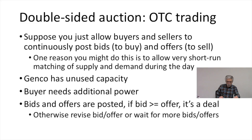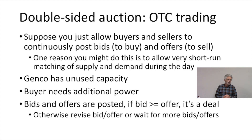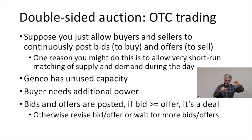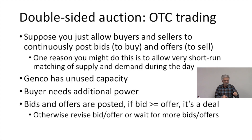Now we're going to move on to a slightly different kind of auction. This is a double-sided auction and it's often called over-the-counter trading. In a double-sided auction, you allow buyers and sellers to continually post bids to buy and offers to sell. When bids to buy are above offers to sell, that's a match — we take the bid and the offer, match them up, and that's a sale. We mark that as a successful trade.